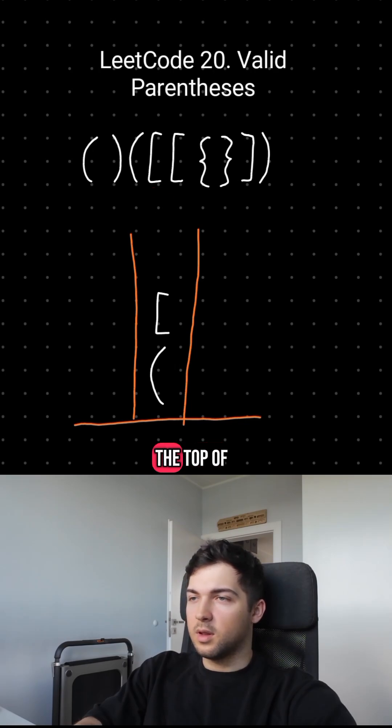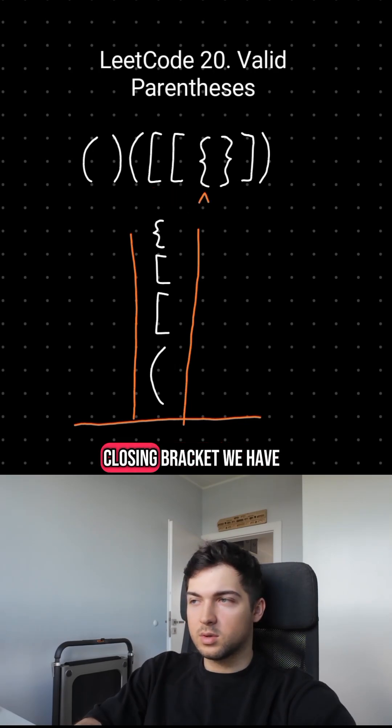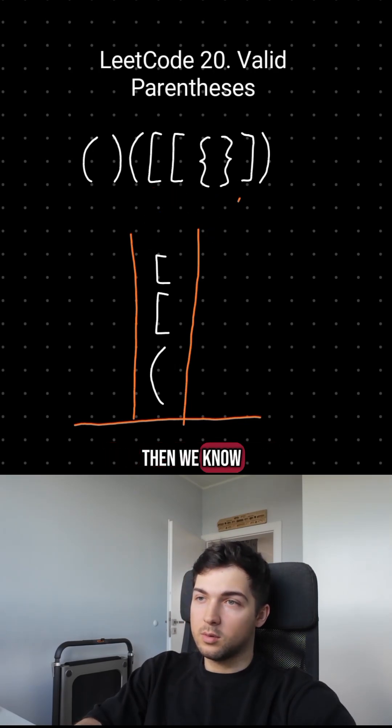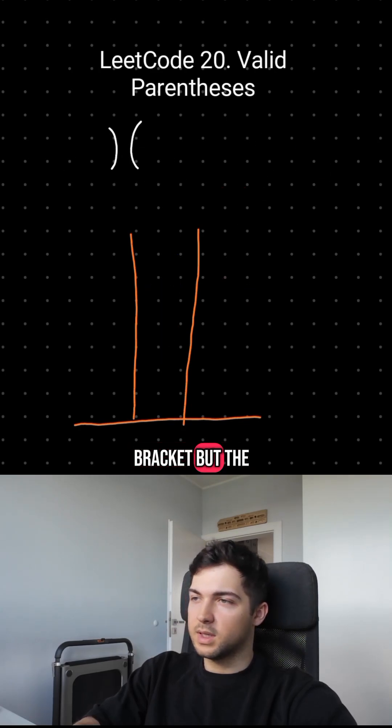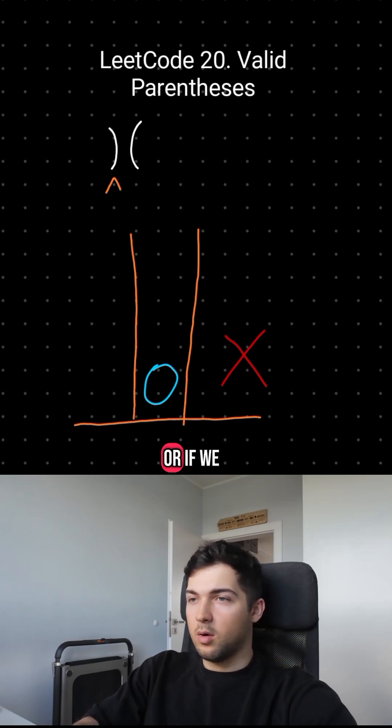If at some point the top of the stack is not matching the closing bracket we have, then we know that our string is not valid. Similarly, if we have a closing bracket but the stack is empty, or if we have something on the stack at the end of our string.